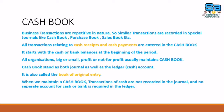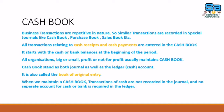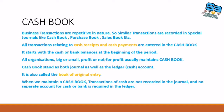In the case of cash book, all transactions related to cash receipts and cash payments will be recorded here. If the company pays an amount in cash or receives an amount in cash, it will come in the cash book. The cash book starts with an opening balance, which will be recorded on the debit side of the cash book.